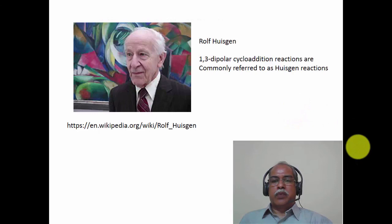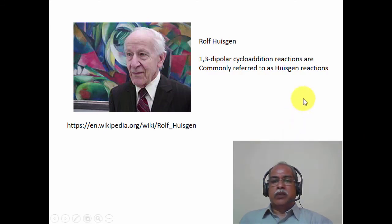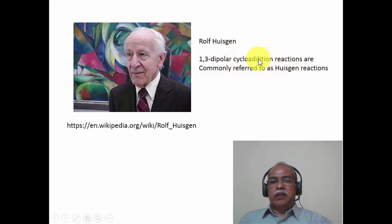The 1,3-dipolar cycloaddition reactions were largely explored by Rolf Huisgen, a German scientist who had a very long career in the chemistry department at the University of Munich. He is regarded as the father of the 1,3-dipolar cycloaddition reaction, and hence these reactions are collectively known as Huisgen reactions.